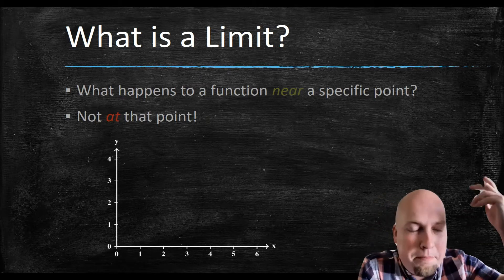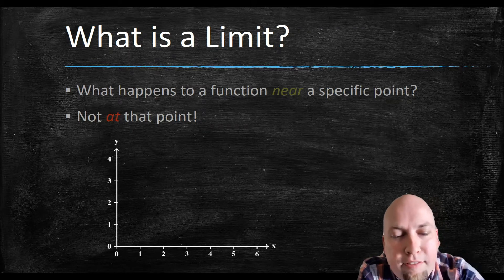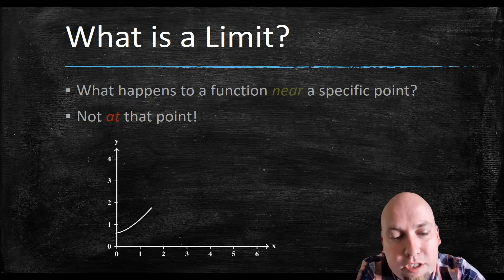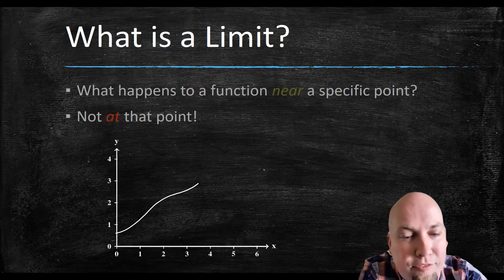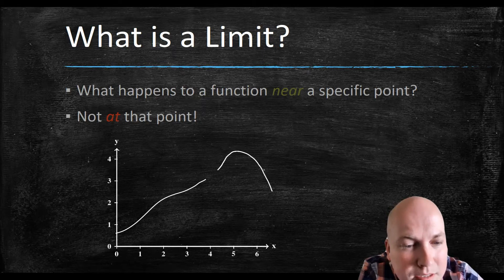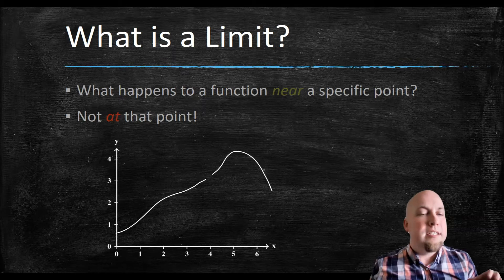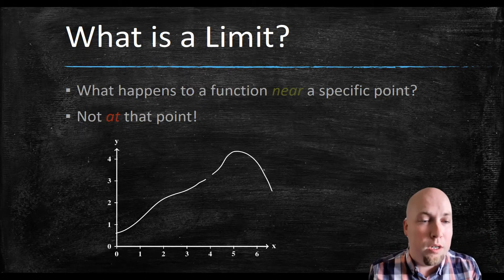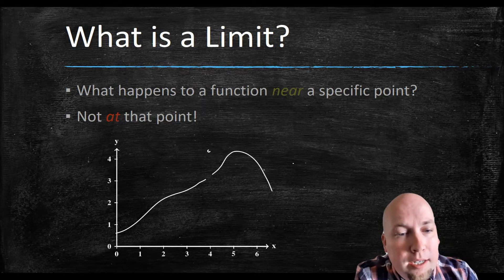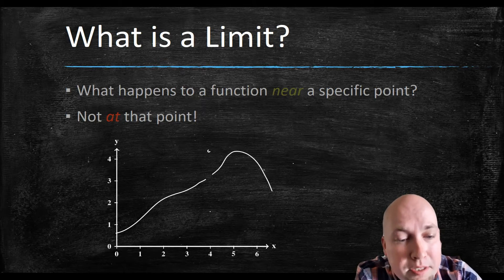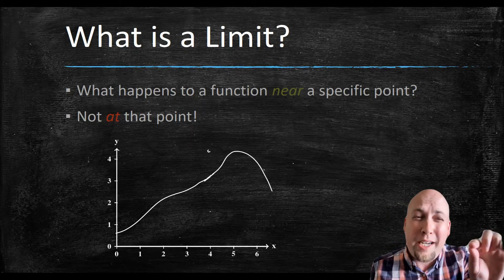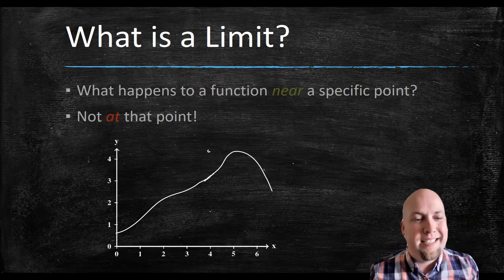To draw a picture to illustrate: let's draw a graph of a function and say I want to know what happens near x equals 4. I don't care what happens at x equals 4, just nearby. Maybe as x gets closer and closer to 4, my y value is going up towards 3. Something similar happens from the right — as x gets closer and closer to 4 from the right, the graph approaches that same value. In that situation, we would say the limit as x approaches 4 is 3. We don't care what happens right at 4 — whether the function jumps up, jumps down, or fills in that gap perfectly.